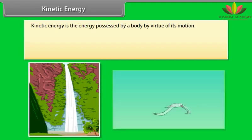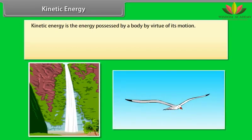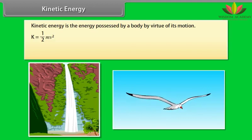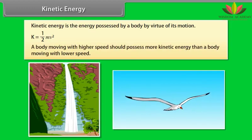Kinetic energy. Kinetic energy is the energy possessed by a body by virtue of its motion. Kinetic energy is equal to half mv square. Running water, flying bird are few examples of bodies possessing kinetic energy. It is logical that a body moving with a higher speed should possess more kinetic energy than a body moving with lower speed.